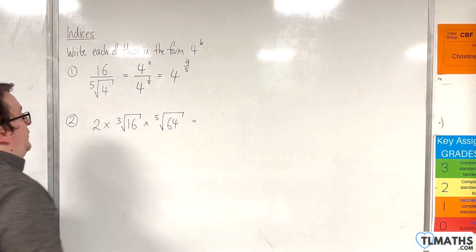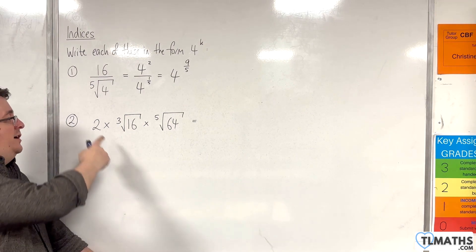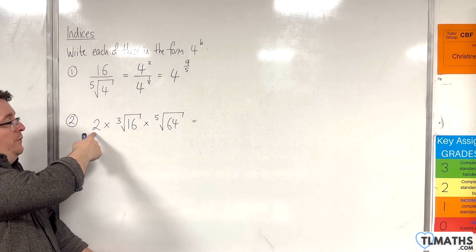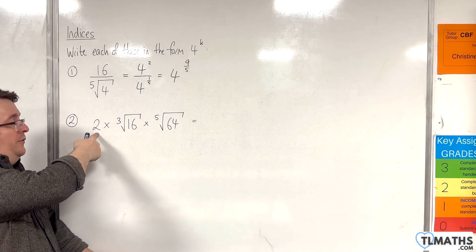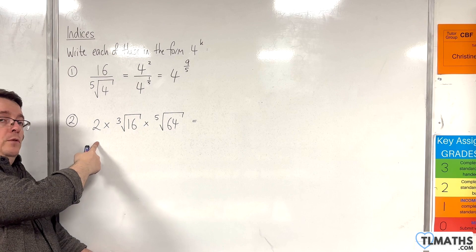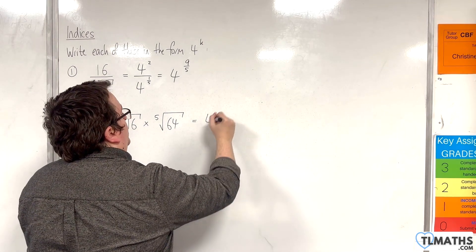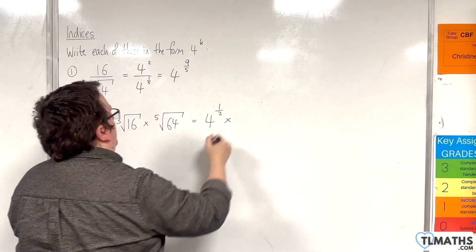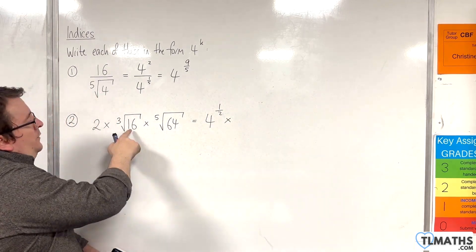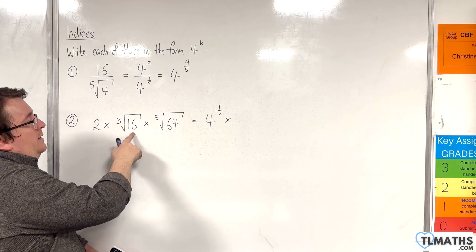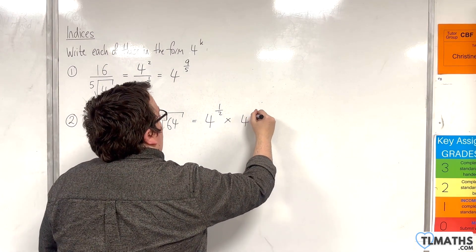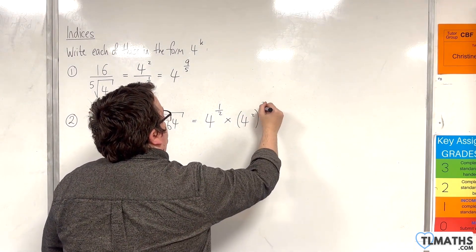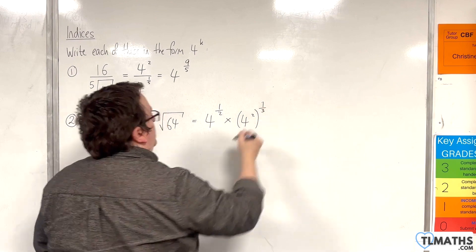Now, for the second example, we start with 2. Now, 2 is the square root of 4, so we're going to write that as 4 to the half. 16 is 4 squared, and that is being cube rooted, so I'm going to write that to the power of 1 third.